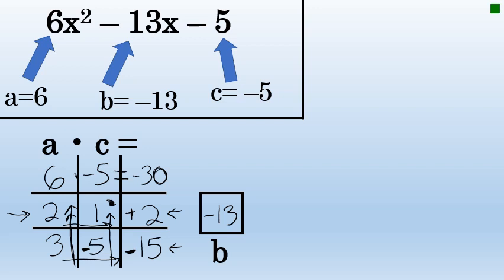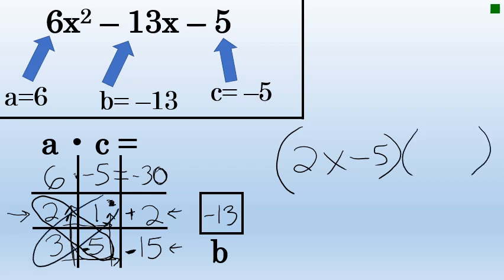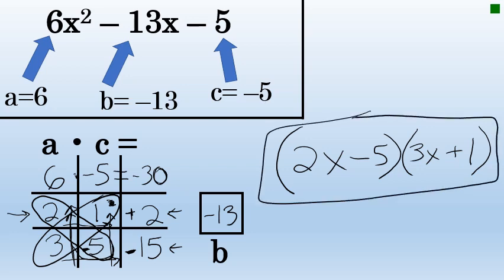Now that I've completed the tic-tac-toe board, I have to grab the correct answer out from these numbers. The correct answer to the factorization comes from the diagonals. The first diagonal, 2 and negative 5, represent the coefficients in the first factor, 2x minus 5. The second factor comes from the other diagonal, 3 and 1. The coefficient on the x is 3, and the constant is 1, positive 1. This is the factorization of 6x squared minus 13x minus 5 using the tic-tac-toe method.